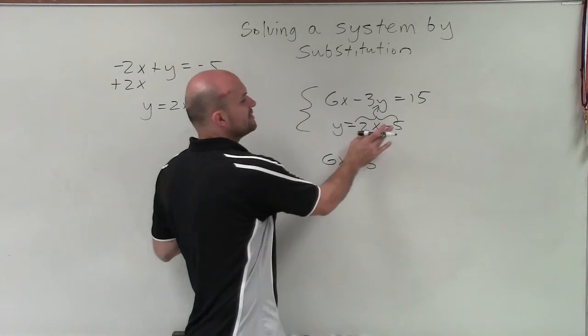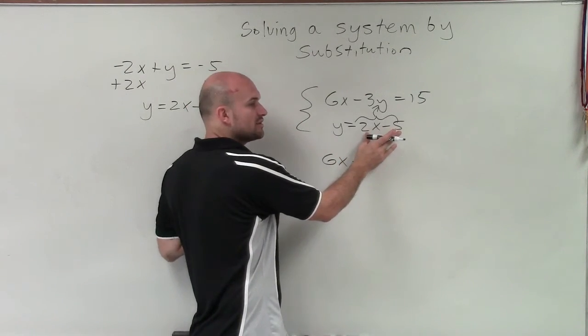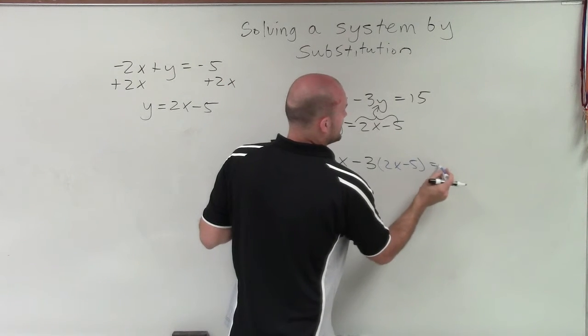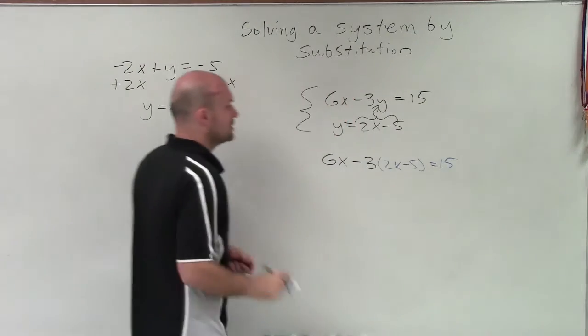not times y, but what the value of y is from our other equation, which is 2x minus 5 equals 15.